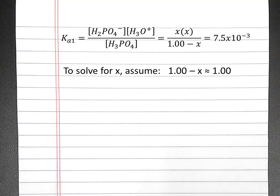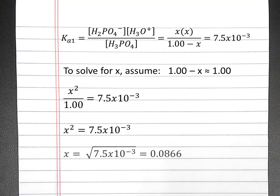To solve for x, we'll first try making a simplifying assumption. We'll assume that 1 minus x is approximately equal to 1. So if we replace 1 minus x with just 1, we'll get x squared divided by 1 equals 7.5 times 10 to the negative third. To solve for x, we take the square root of both sides, so x equals 0.0866.